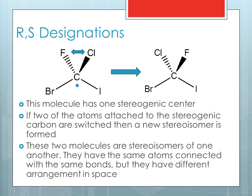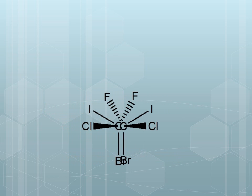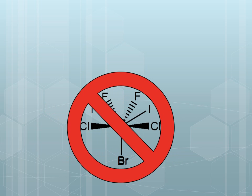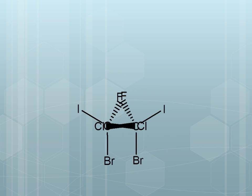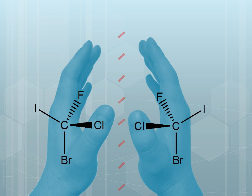These two molecules are stereoisomers of one another. They have the same atoms connected with the same bonds, but have different arrangements in space. Also know that these two molecules do not coincide and are non-superposable. And also, like a pair of hands, the two molecules are mirror images of one another.